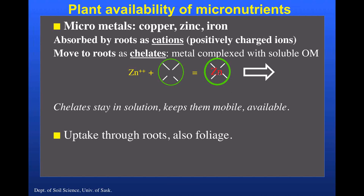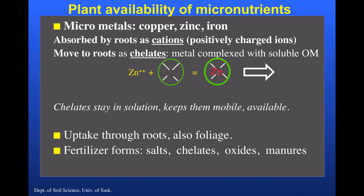Micronutrient uptake occurs through the roots and also through the foliage, which is why foliar-applied micronutrients can be effective in addressing a deficiency. Common fertilizer forms include salts like copper sulfate, zinc sulfate, and iron sulfate. There are also chelated formulations, typically applied at lower rates, and oxides, which are of lower solubility and more slowly available. I would also include manures as a source of micronutrients for pulse production, since manures do supply micronutrient elements like copper, zinc, and iron.